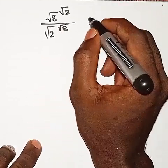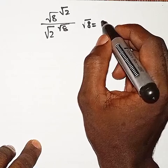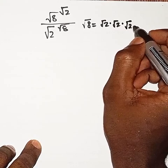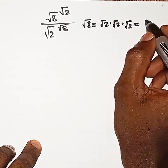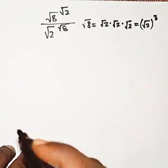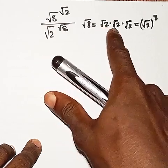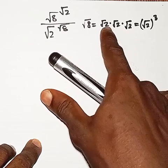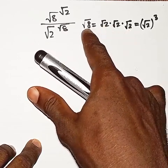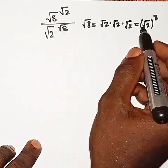First of all, I would like you to recall that when you have root 8, root 8 is the same thing as having root 2 multiplied by root 2 multiplied by root 2, and that must give us root 2 all raised to power 3. Because if we say root 2 times root 2 times root 2, so 2 times 2 is 4, 4 times 2 is 8, so we're going to have root 8.